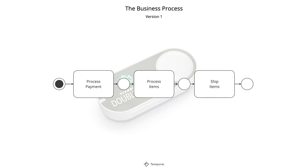But let's do a twist, because every good story has turns and twists. Remember the original business process: process payment, process item, then ship the items. The marketing team figured out that most of the time we get the money anyway, so let's process the items immediately as soon as we push the button to get them out the door as fast as possible. So now we're switching the business process to: process item, process payment, ship items.